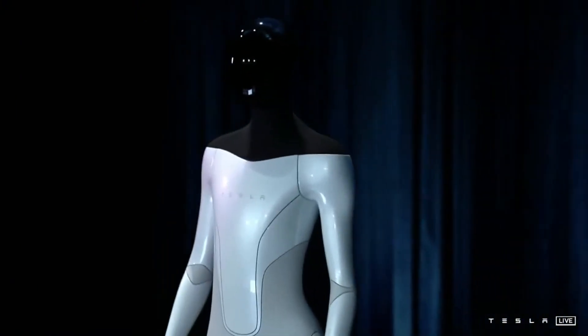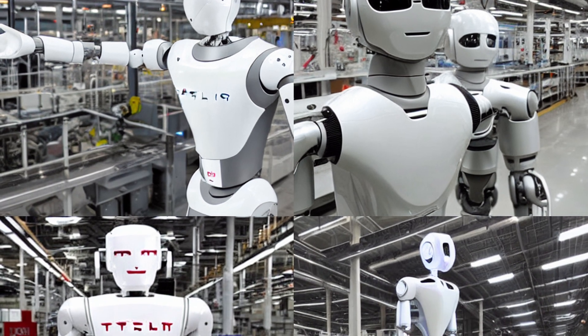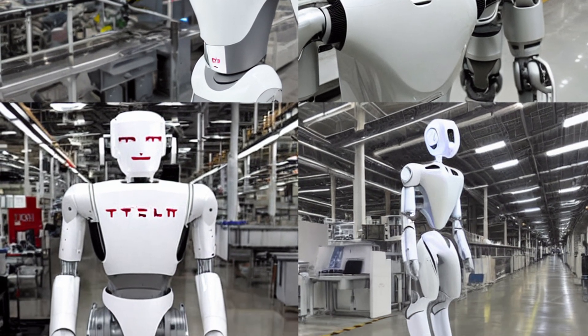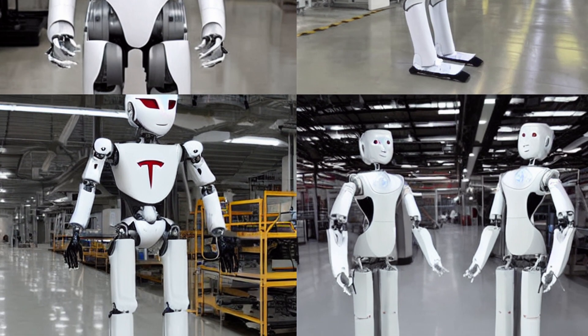Elon Musk details Tesla's humanoid robot after these proof-of-concept images. Tesla's humanoid robot, codenamed Optimus, has a target weight of 125 pounds and is slated to be unveiled at the end of this month.